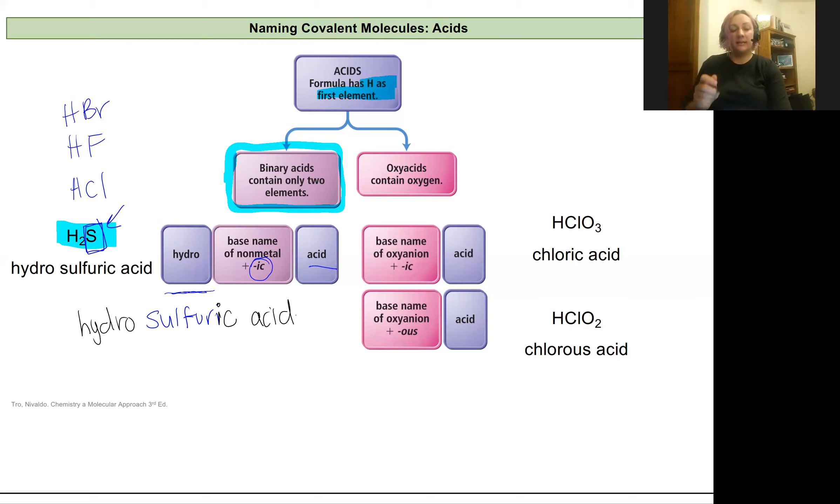Let's try an oxy acid now. The only thing that distinguishes an oxy acid from a binary acid is that it has oxygen involved. So if there's oxygen, you have an oxy acid, kind of like if there was oxygen and it was an anion, you have an oxyanion. For these ones, we're going to do a base name with an IC ending or an OUS ending followed by acid. That IC versus OUS depends on if it is an oxyanion with an ITE ending as an anion or an ATE ending.